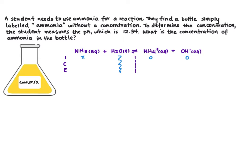We can solve for the equilibrium concentration of ammonium and hydroxide using our pH. So first thing we're going to do is calculate pOH from pH. So our pOH is going to equal 14 minus the pH so that's going to equal 1.66.